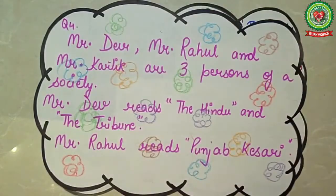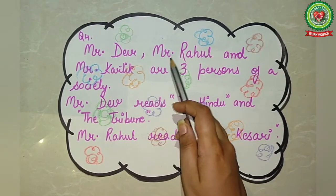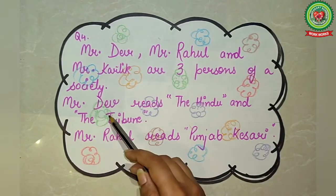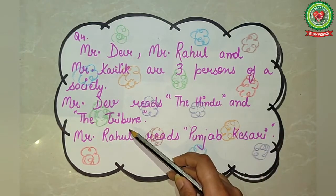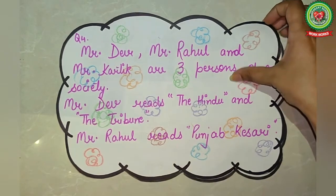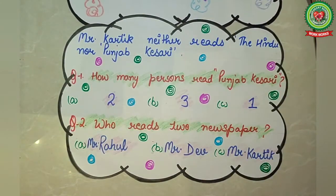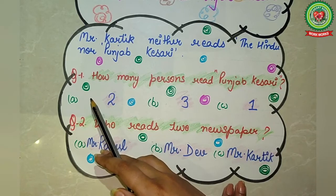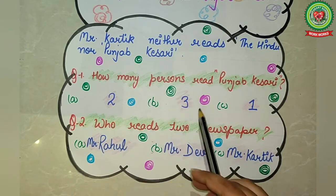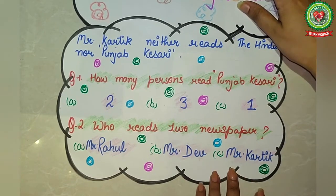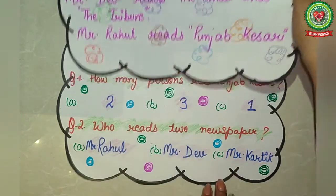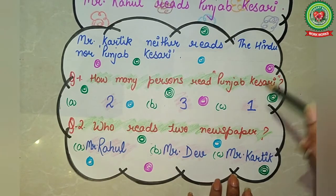Coming to the next example. Read the statement: Mr. Dev, Mr. Rahul, and Mr. Kartik are three persons of a society. Mr. Dev reads The Hindu and The Tribune. Mr. Rahul reads Punjab Kesari. Mr. Kartik reads neither The Hindu, The Tribune, nor Punjab Kesari. First question: how many persons read Punjab Kesari? Punjab Kesari is read only by Mr. Rahul, so the answer is option C.